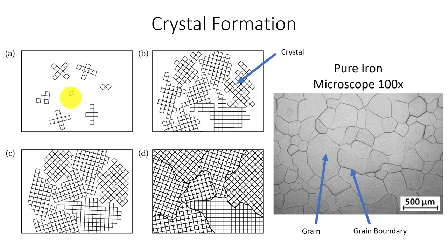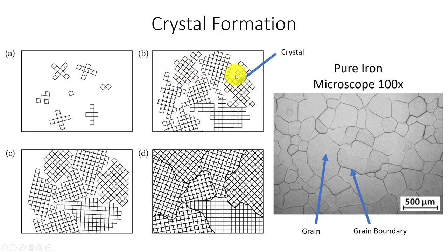Remember we talked about grain size earlier in one lab. These things are going to tend to grow and repeat — it's a crystalline repetitive structure, kind of like Legos being built on and added on. In stage B here we're seeing the crystals start forming, and in C we're really seeing the crystals take shape. Then they start colliding with each other, and where they collide, that's going to form our grain boundaries.